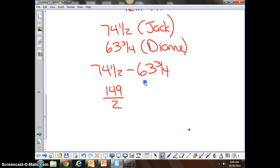And then 63 and 3/4 converted to a mixed number would be 63 times 4, which is 240 plus 12, 252 plus 3 is 255. So we have 255 over 4.